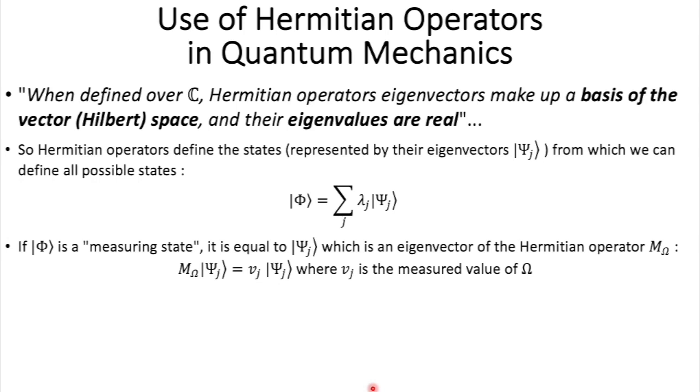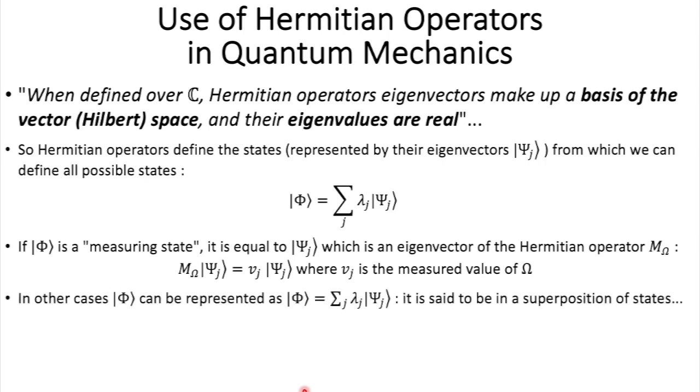And now, if phi is a measuring state, well, it is equal to psi j, which is an eigenvector of the Hermitian operator. So, just like this, and where vj is the eigenvalue, the measured value of omega. And in other cases, non-omega states, phi can be represented as the sum here, as we just saw. And in which case we say that this state is in a superposition of states, which is a bit confusing, and caused a lot of trouble, especially when we looked at experiments like the double-slit experiment by Young or the cat experiment by Schrodinger, with this cat being both dead and alive at the same time. Well, all of this is described in another video from this series. But, at least now you know what Hermitian operators are and how we can use them to be isomorphic to what's really happening in the physical world. So fascinating!